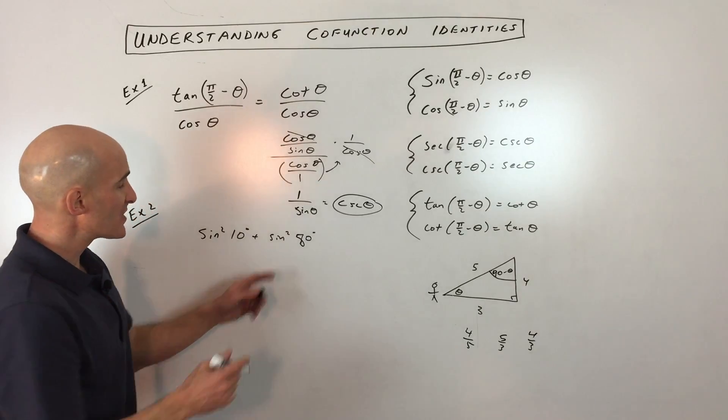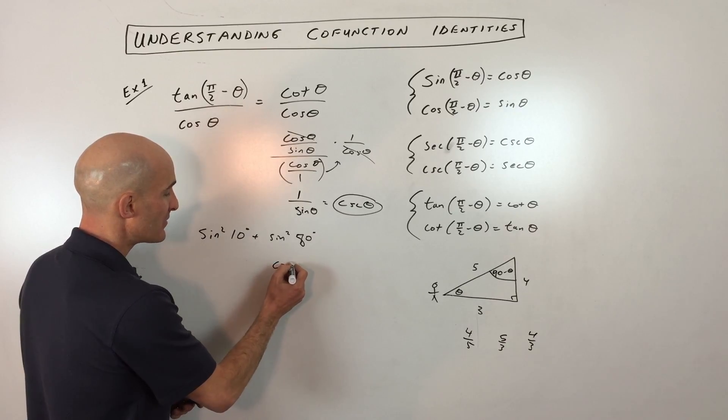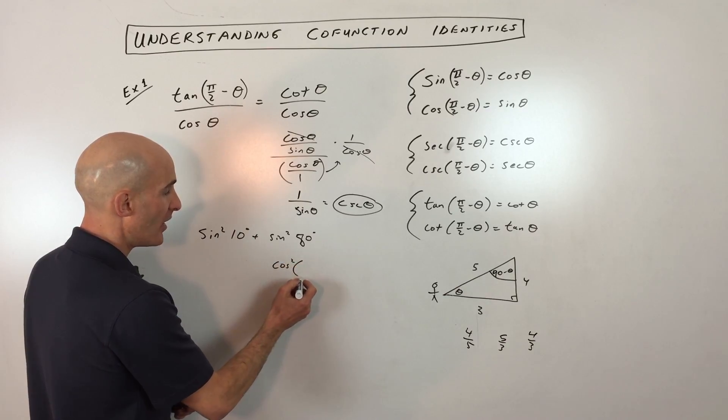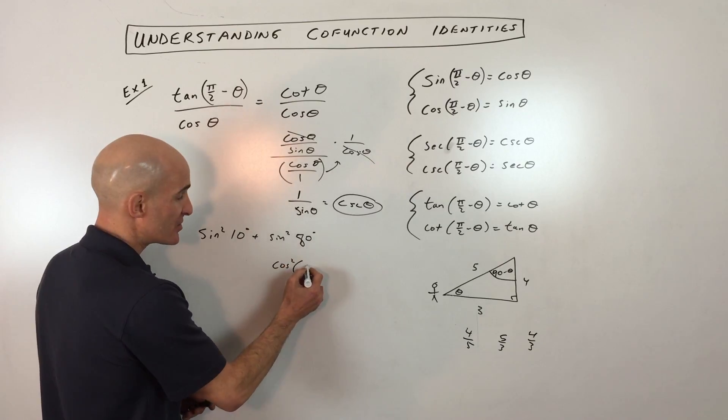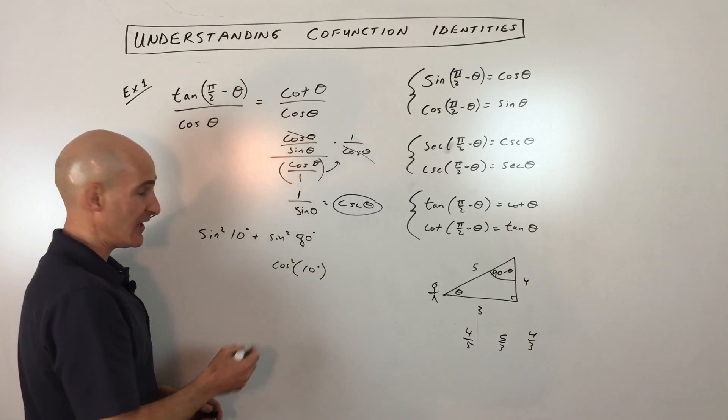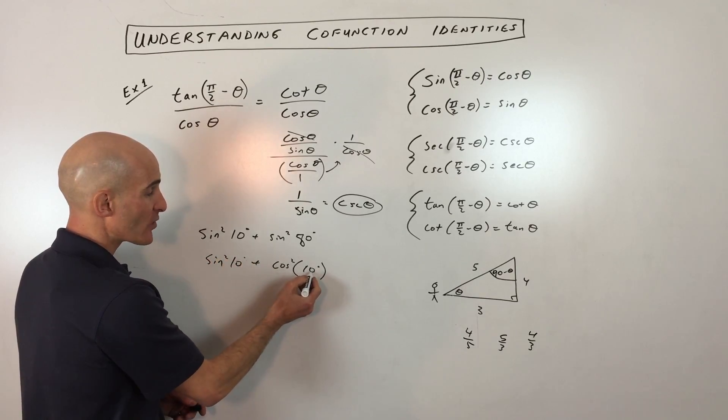But what we can do is we could say, well, using our cofunctions, I know that sine squared of 80 degrees is actually the same thing as cosine squared of 90 minus 80 degrees, which is 10 degrees. Okay, so I'm just going to bring down this sine squared of 10 degrees plus cosine squared of 10 degrees.